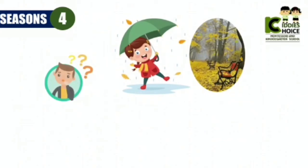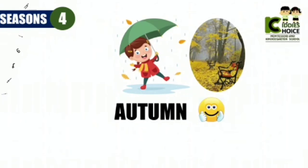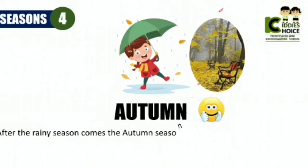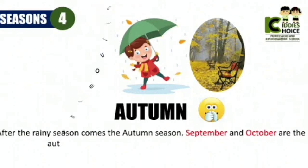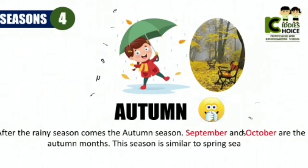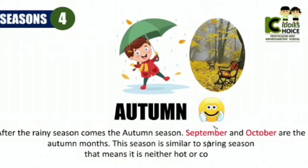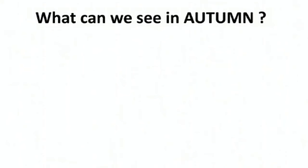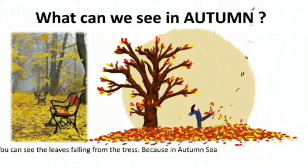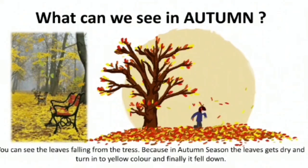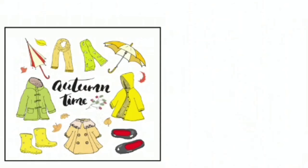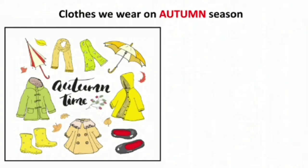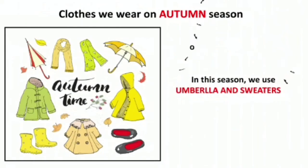Now tell me, what season is this? Autumn season. After the rainy season comes the autumn season. September and October are the autumn months. This season is similar to spring season — it is neither hot nor cold. You can see the leaves falling from the trees, because in autumn the leaves get dry and turn yellow and finally fall down. In this season we use umbrellas and sweaters to protect ourselves from the cool breeze and falling leaves.